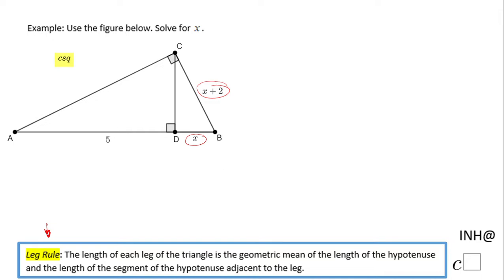The leg rule says the length of each leg of the triangle—so in our case, the leg of the triangle ABC that we care about is BC, which is x plus two. That leg is the geometric mean, and geometric mean means square root of a product. The product of what? The length of the hypotenuse.